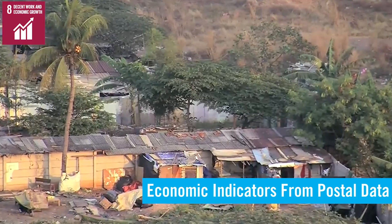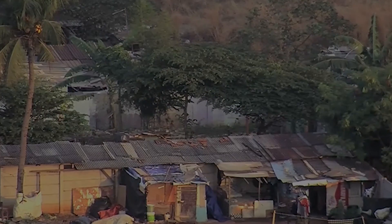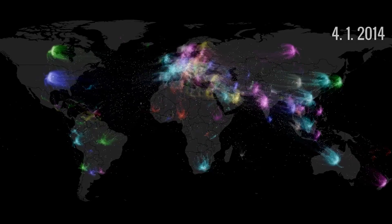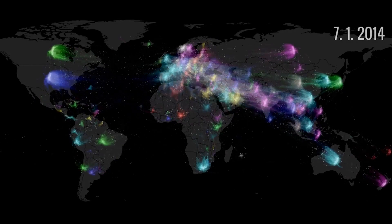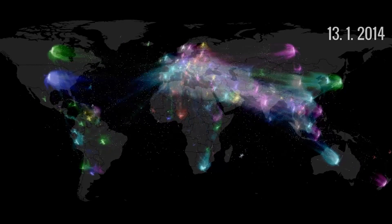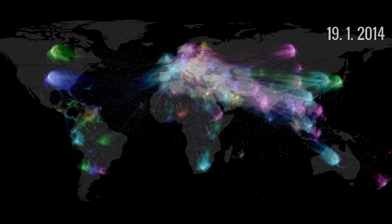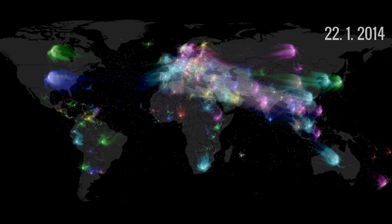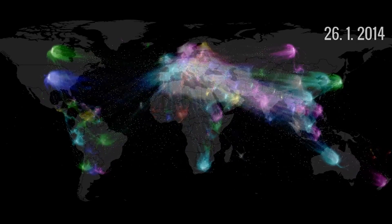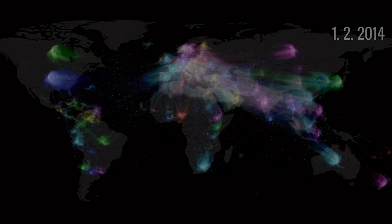Even people who are not connected to the Internet are still producers of big data. For example, every time a letter is sent through the post office, it generates a data footprint. In this visualization, each dot represents thousands of real letters sent from country to country. Researchers have found links between this mail flow and economic indicators, such as GDP, and such information can provide a global picture of economic trends, poverty, and resilience.